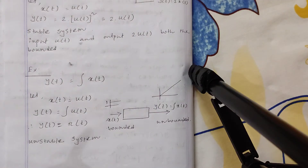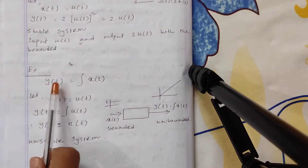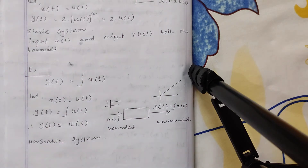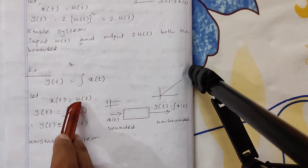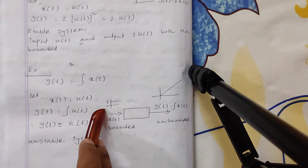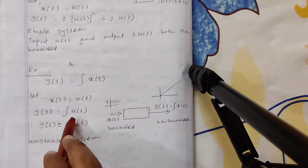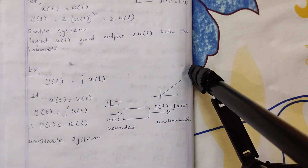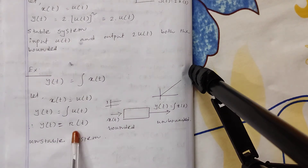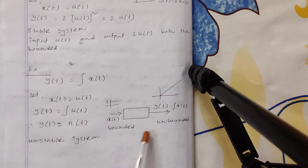Next problem: y(t) = ∫x(t)dt. If the input is u(t) (unit step signal), then the output y(t) = ∫u(t)dt. When we integrate the unit step signal, we get the ramp signal. So y(t) = r(t), the ramp signal. The ramp is an unbounded output.